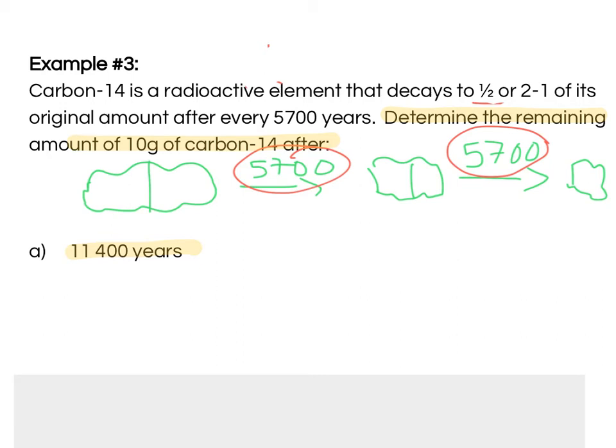Okay, so, I need to say, well, how many 5,700-year periods have gone by after 11,400 years? So, I can say, well, I know that 11,400 years divided by 5,700 gives me two half-life periods. So, in other words, two of these little stages have gone by to give me 11,400.